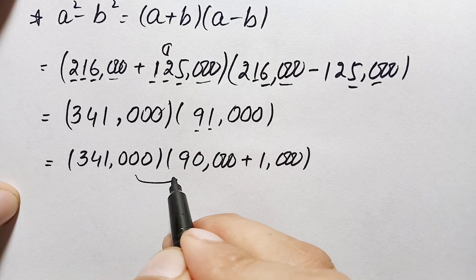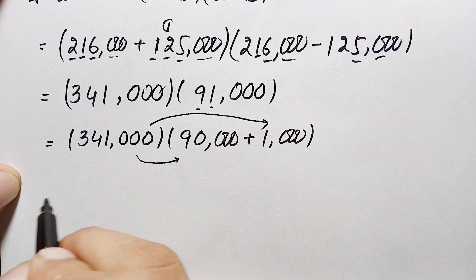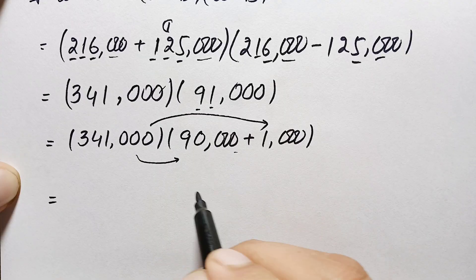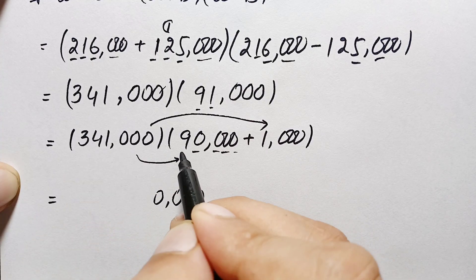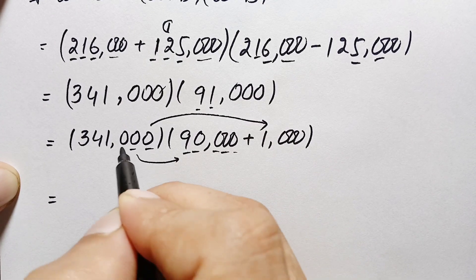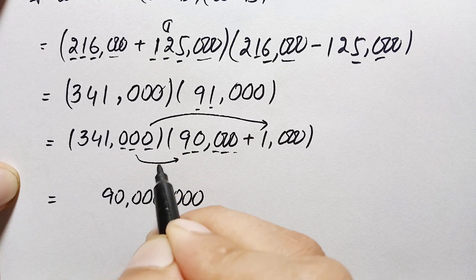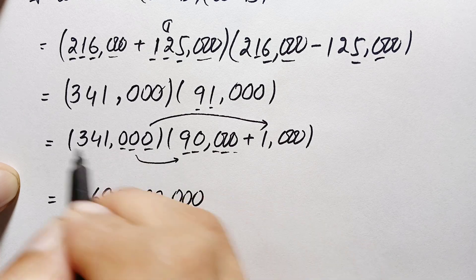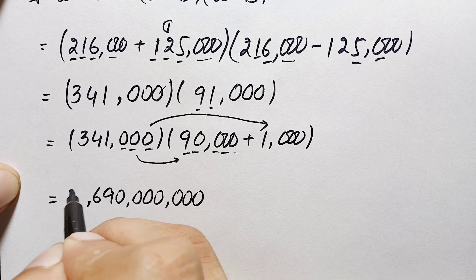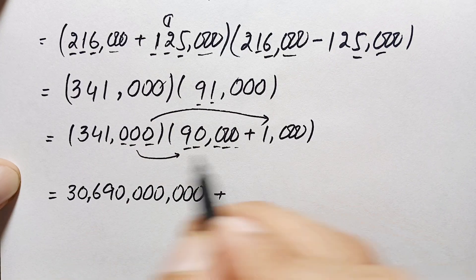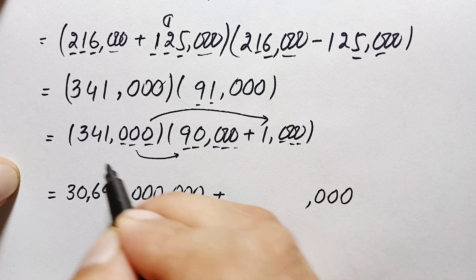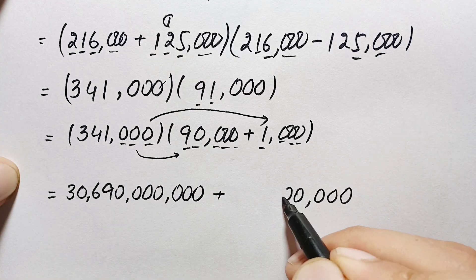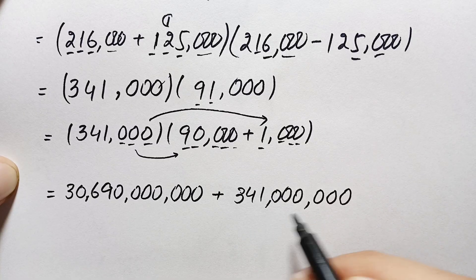We multiply 341,000 first by 90,000 and then by 1,000. Multiplying by 90,000: the four trailing zeros contribute four zeros, then 9 times 1 is 9, 9 times 4 is 36 so write 6 and carry 3, 9 times 3 is 27 plus 3 carried is 30. This gives 30,690,000,000. Multiplying 341,000 by 1,000 simply appends three zeros, giving 341,000,000.